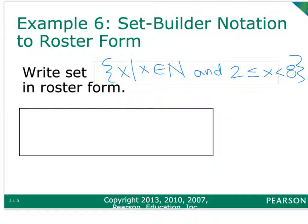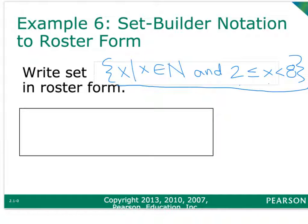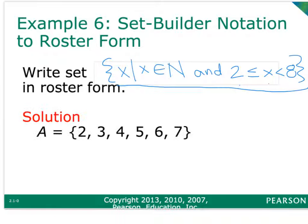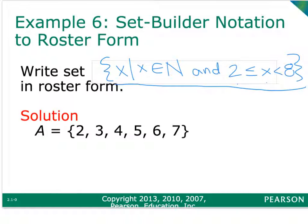Sometimes they'll give you the set builder notation and want you to go backwards. If I was to read this in words, it would say: X such that X is in the set of natural numbers and X is greater than or equal to 2 and smaller than 8. You could also say X is between 2 and 8 and includes the number 2. If you were going to write it in roster form, you would write {2, 3, 4, 5, 6, 7} — you would not include the 8.